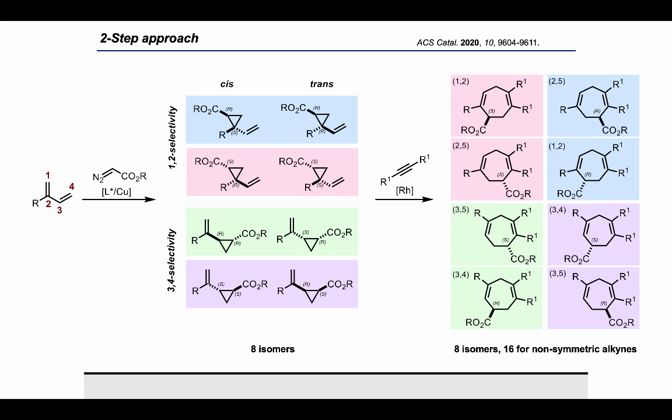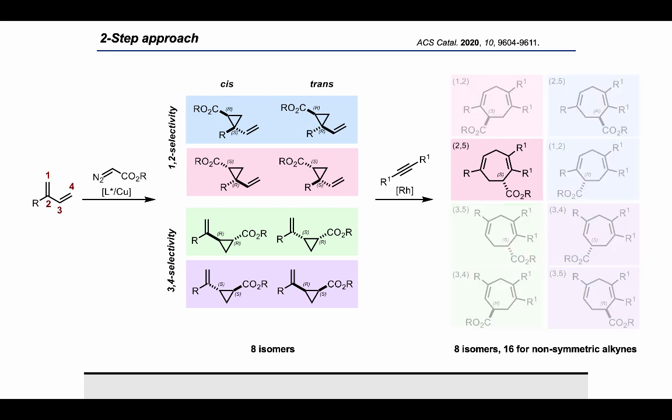In the second reaction, in case we decide to use non-symmetrical alkynes, the potential outcomes are doubled again as a result of the two possible regioselectivities of the insertion step. What we wanted to achieve in order to deliver a synthetically useful methodology is the selective formation of only one isomer. The question to answer, therefore, is at which stage can we control each of the different stereochemical aspects of our combined process?